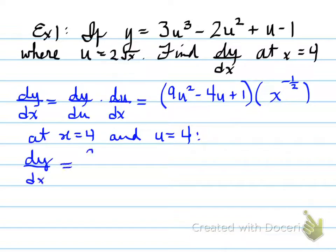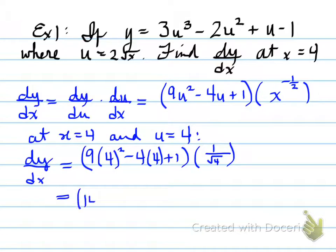Anyways, dy by dx at x equals 4 and u equals 4 is going to equal 9 times 4 squared minus 4 times 4 plus 1, all times 1 over root 4. As an answer, you will get a value of 129 over 2. That is the answer to example number 1. Now, let's move on.